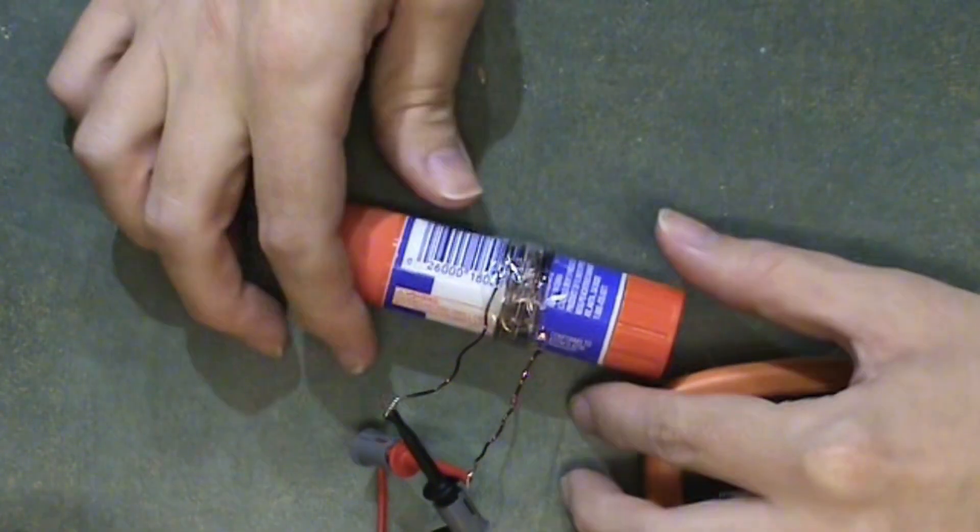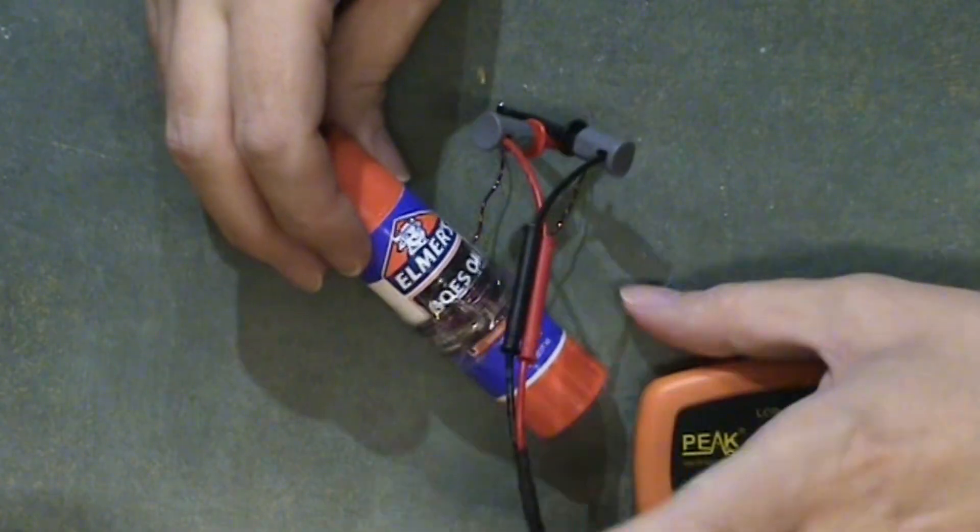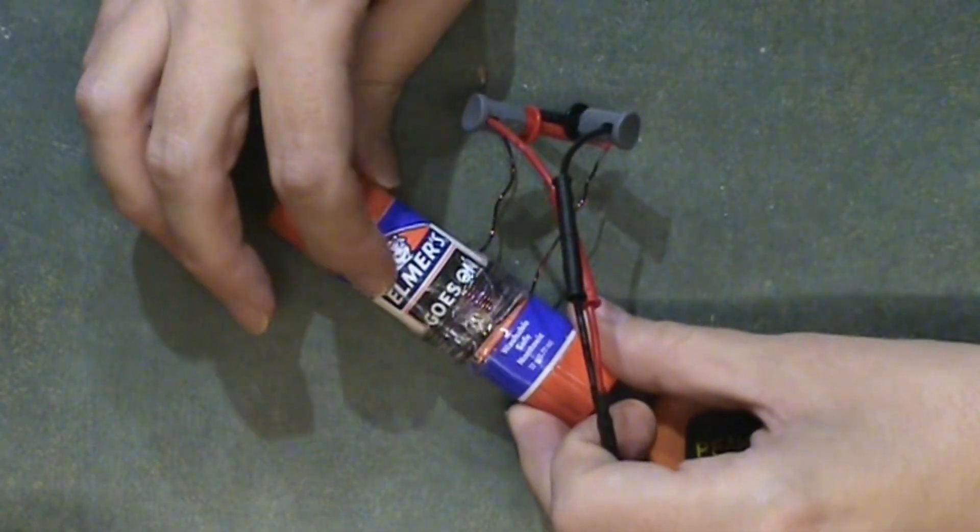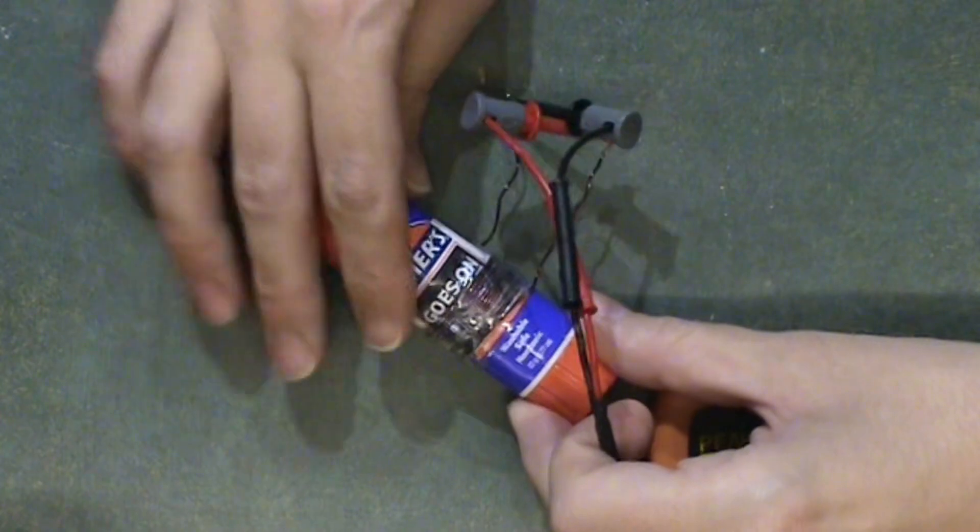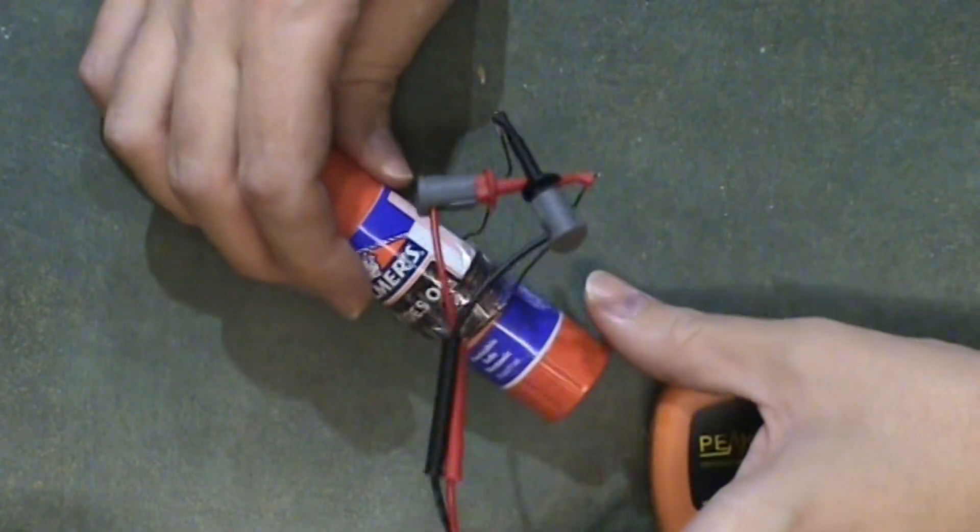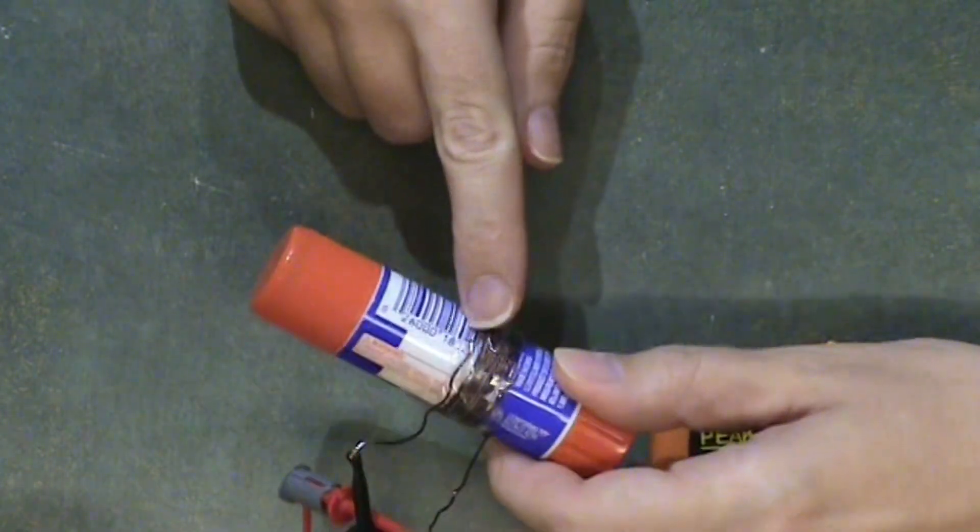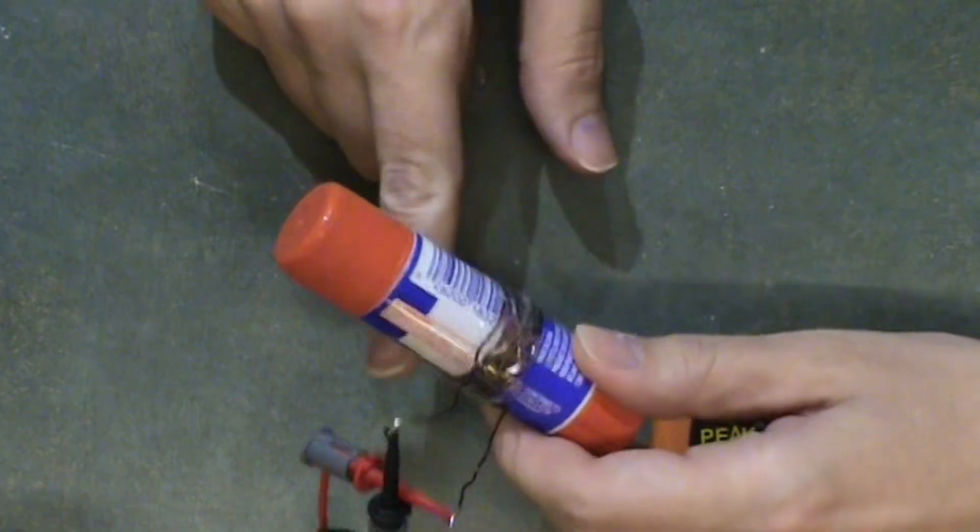So what I did was I got a glue stick and I took the inside out of it. I took the glue out and cleaned it out on the inside, and I wrapped about 10-11 turns of magnet wire around it.